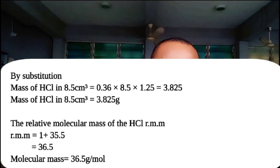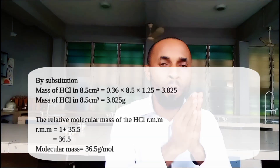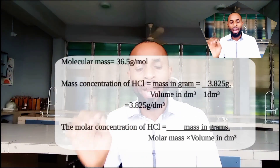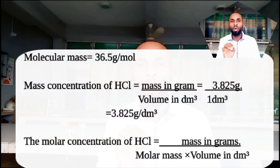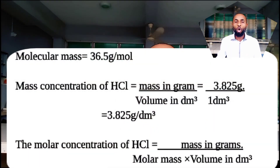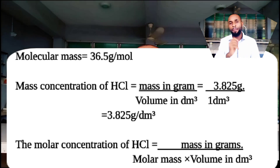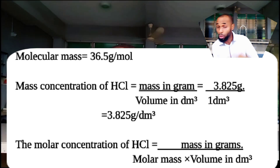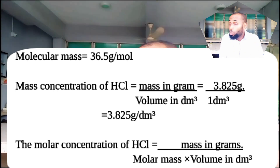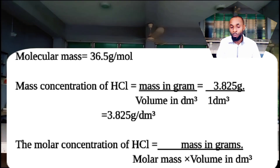Now calculating the concentration in grams per dm³: we look at mass concentration of the acid, which is 3.825g over 1dm³, giving us 3.825g per dm³, because we are dissolving in 1dm³ which is 1000cm³.